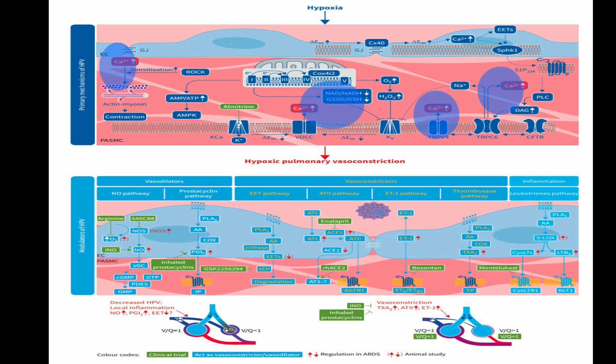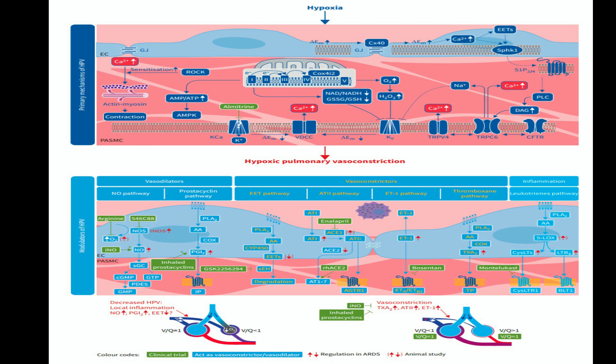Other contributing mechanisms to HPV can include changes in intracellular AMP/ATP levels, activation of phospholipase C, increase in diacylglycerol levels, and propagation of endothelial signals via gap junctions and sphingosine 1-phosphate signaling. During prolonged hypoxia, additional mechanisms such as increased calcium sensitization by rho kinase might be involved.